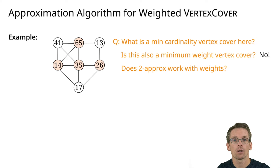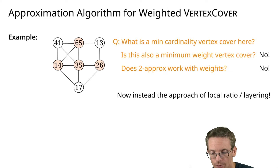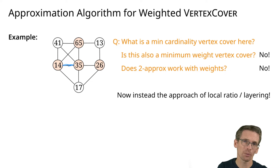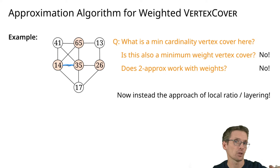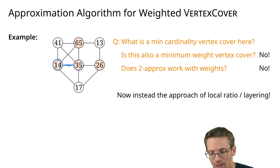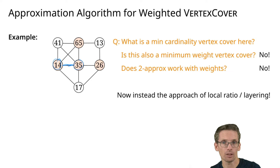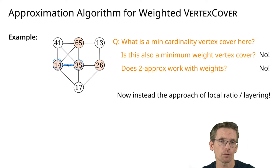That is also not the case. The problem is: if I select an edge in the matching, the 2-approximation argument assumes that one of the two endpoints would have been selected anyway, and the other adds a factor of two. But if the one we would have added anyway has weight 14 and we additionally get a cost of 35, that does not give us a 2-approximation. So we are going to see a different approximation algorithm for vertex cover.